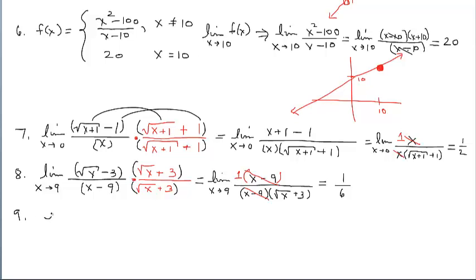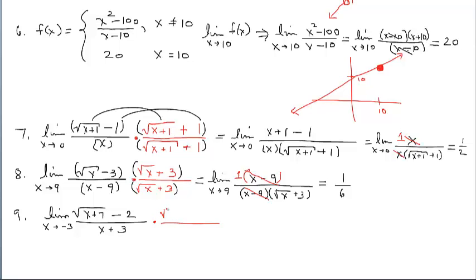Let's look at another one. You can see already that if I replace negative 3 for x, I'll be dividing by zero. Let's see what takes place in the numerator: plug in negative 3, add 7, the square root of 4 is 2, 2 minus 2 is 0. So we get indeterminate. We can't have that as an answer — we need a number or D and E. So I identify a square root and think conjugate: change the operation, keep the first and last terms, complete the form of 1 for the fraction, and do the necessary algebra.